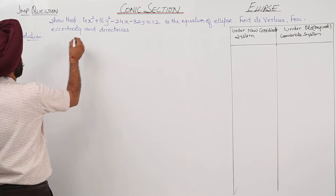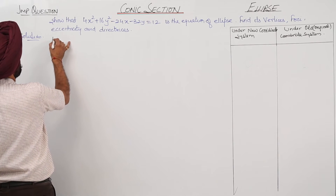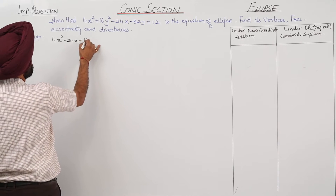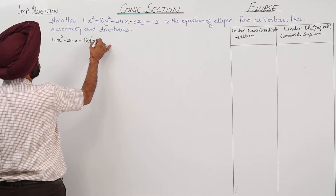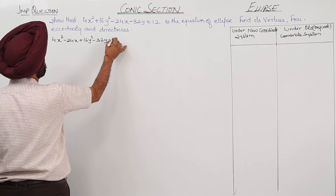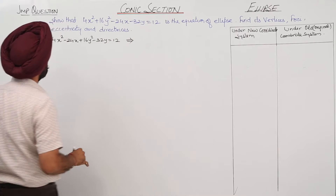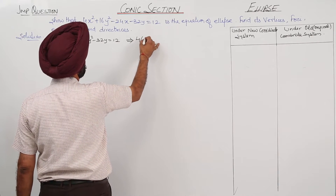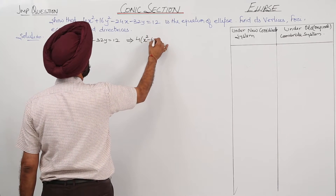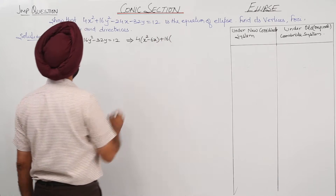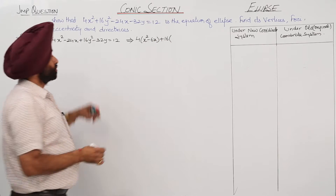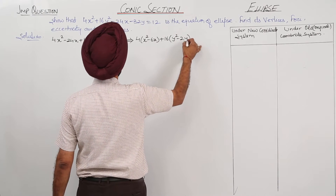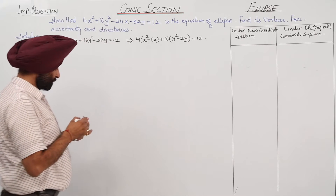So we can write the given equation as 4x² − 24x + 16y² − 32y = 12, and this again we can write as 4(x² − 6x) + 16(y² − 2y) = 12.